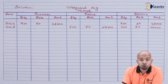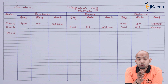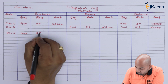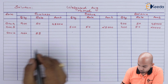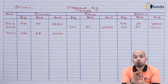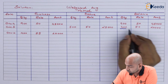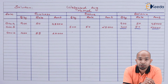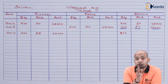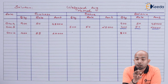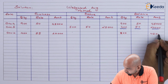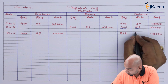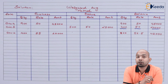The next purchase relates to December 10 — 400 units purchased at 55 per unit, giving a value of 22,000. This is added to the balance: earlier balance was 400 units (20,000), plus 400 units (22,000), giving a total balance of 800 units worth 42,000. Dividing 42,000 by 800 gives an effective rate of 52.5.